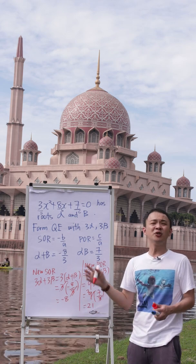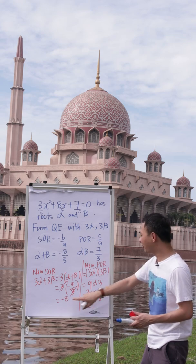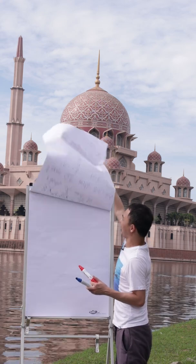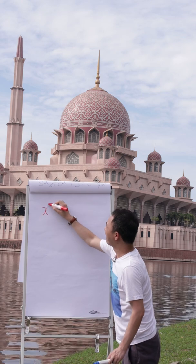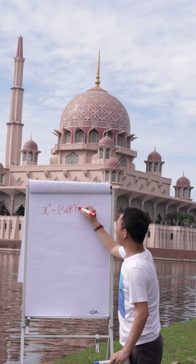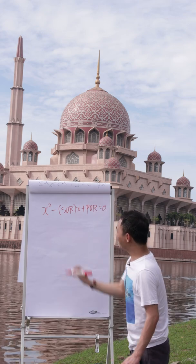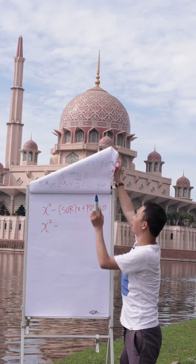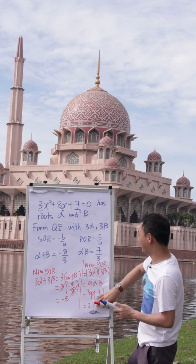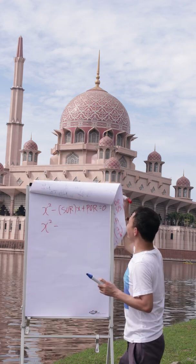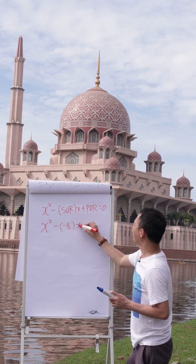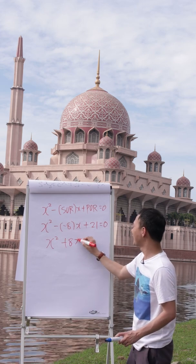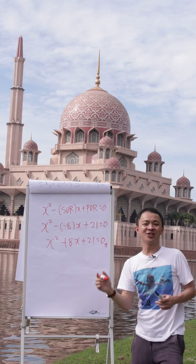After you get your new sum of root and new product of root, you need to substitute both into the general equation: x squared minus (sum of root)x plus (product of root) equals 0. So it becomes x squared minus negative 8 times x plus 21 equals 0. Both negatives give positive, so the final answer is x squared plus 8x plus 21 equals 0. This is the quadratic equation they asked for.